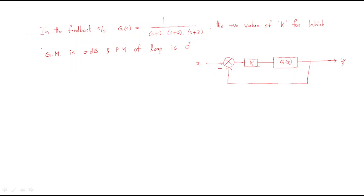Hello everyone. In this session, some more problems regarding the water plug — so the problem is in the feedback system: G(s) = 1 / [(s+1)(s+2)(s+3)]. Find the positive value of K for which gain margin is 0 dB and the phase margin of the loop is 0 degrees.